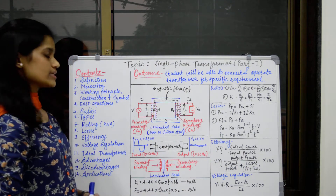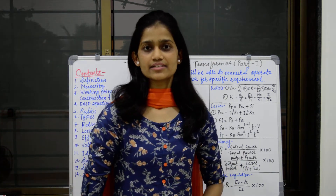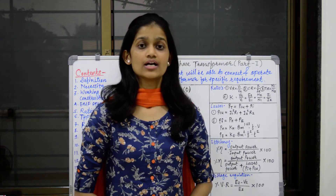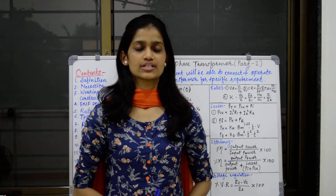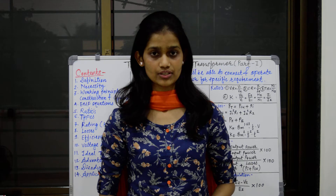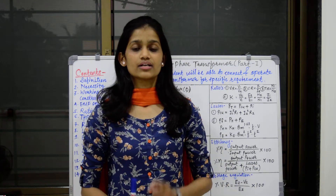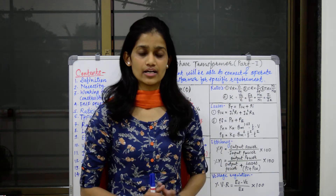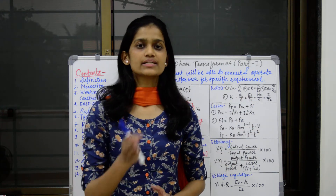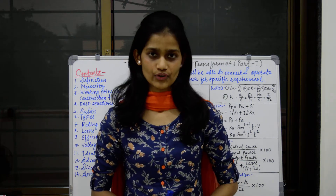Next is the necessity of the transformer. Do you know from where electricity comes to your home and what is the rating of that supply? There are three steps of electricity: first, generation; second, transmission; and third, distribution. For generation and transmission of electricity, we require a very high voltage level, and for distribution, we require a very low voltage level. For increasing and decreasing this voltage level, we require a machine which is called a transformer.